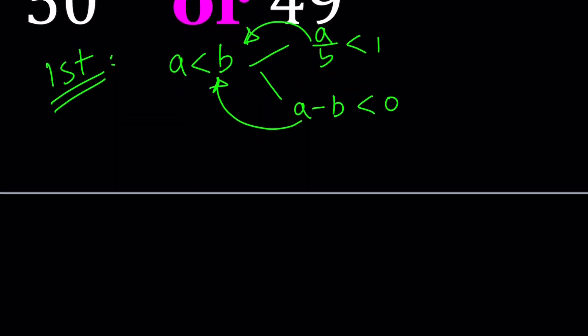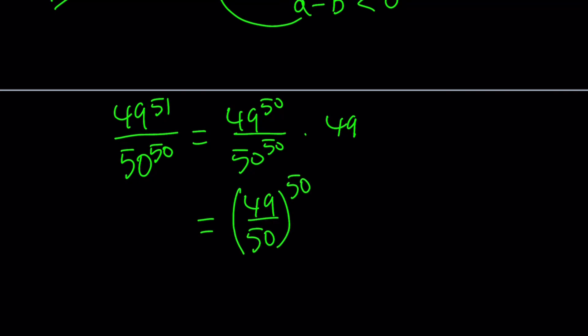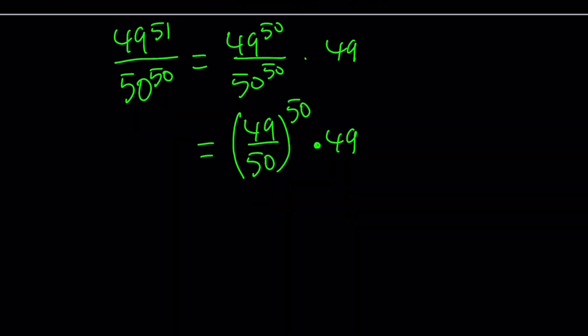Let's divide 49 to the power 51 by 50 to the power 50. I'll split one of the 49s and write it separately. Using the common exponent, I'll write this as 49 over 50 to the power 50. Now 49 over 50 is less than 1, so I can write it as 1 minus 1 over 50, then raise it to the 50th power and multiply by 49.